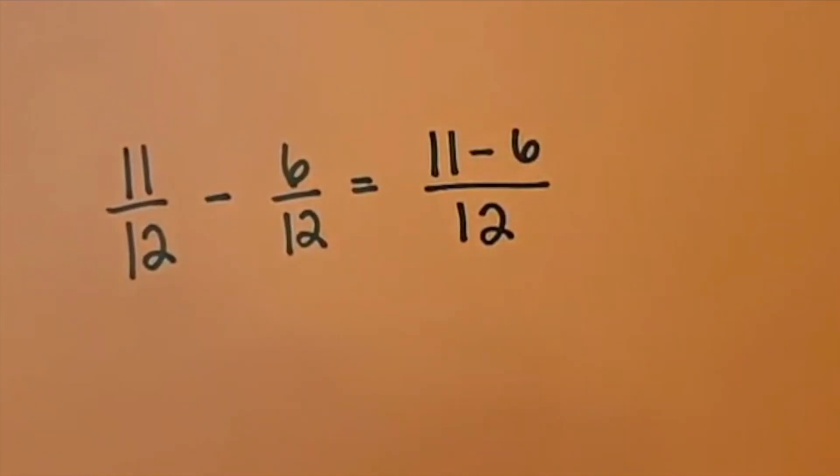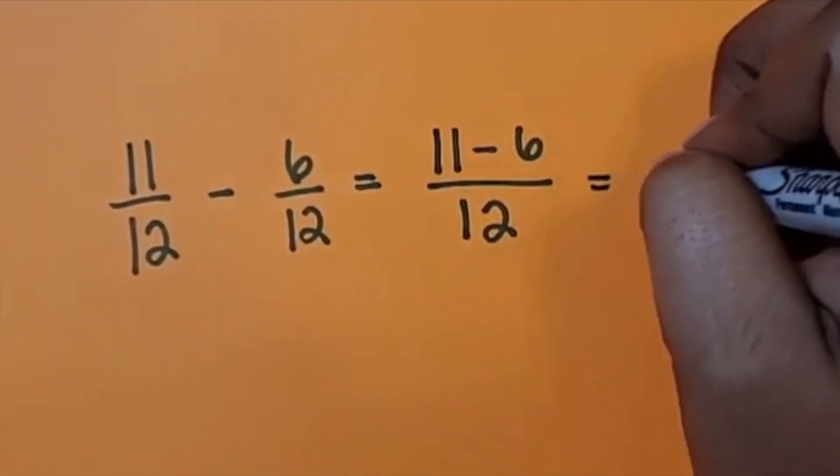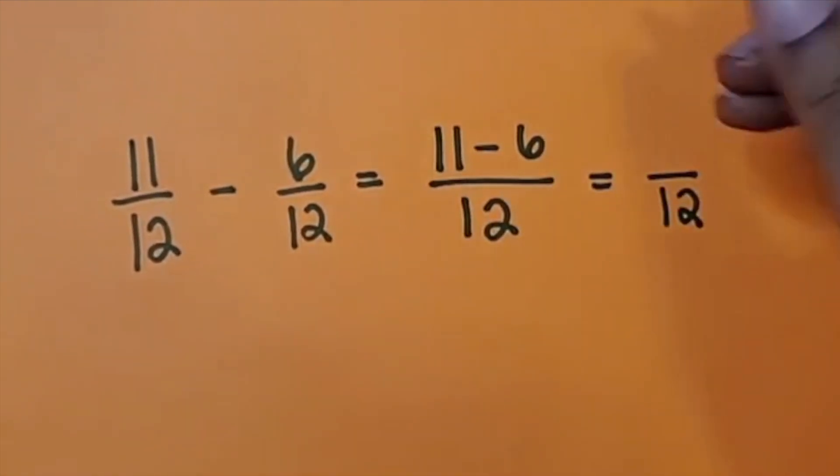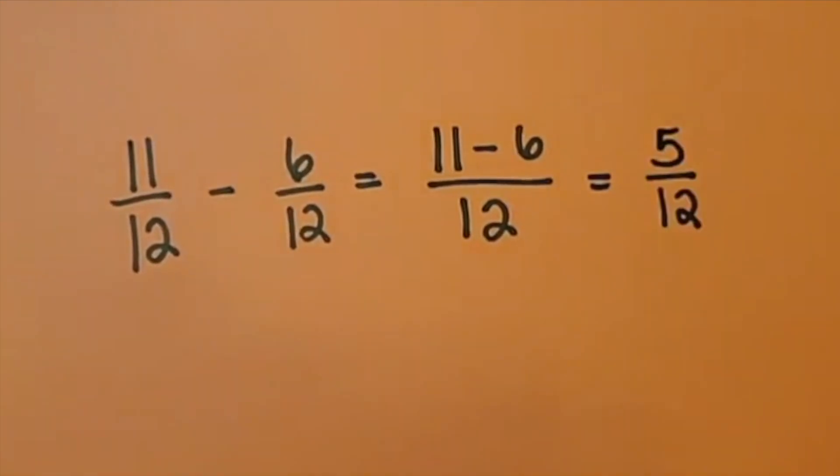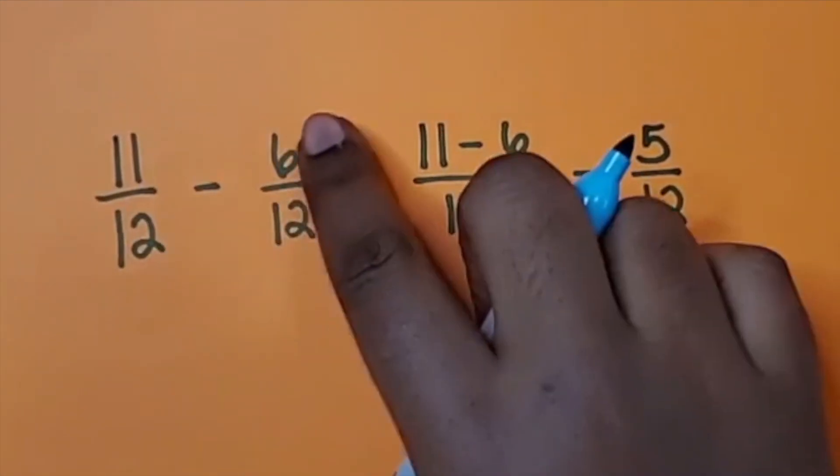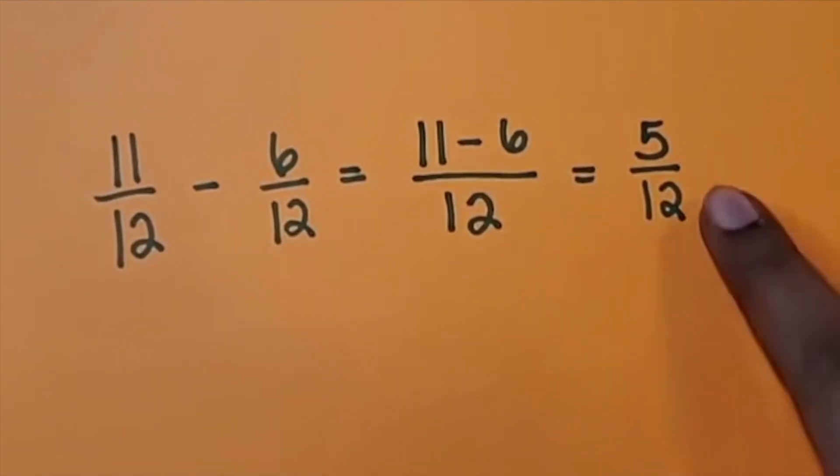Again, whatever we do, whatever difference we get, we know the size of our pieces will remain the same. It will be twelfths. So 11 subtract 6 is 5. So we're left with 5 twelfths. 11 twelfths minus 6 twelfths equals 5 twelfths. The twelfth did not change.